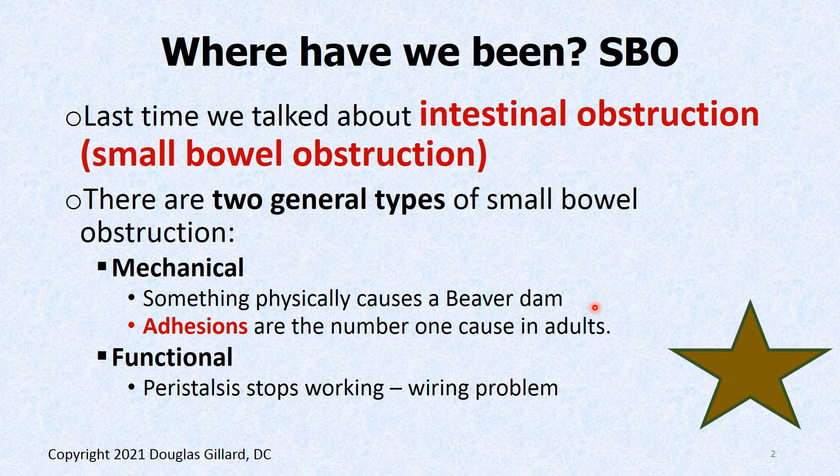Functional occurs when peristalsis stops working. There's no mechanical problem — everything has the potential to work, but it just stops. It's usually some problem with the enteric nervous system. Mechanical obstruction means the enteric nervous system is fine and peristalsis is fine, but there's a physical blockage of the tube.